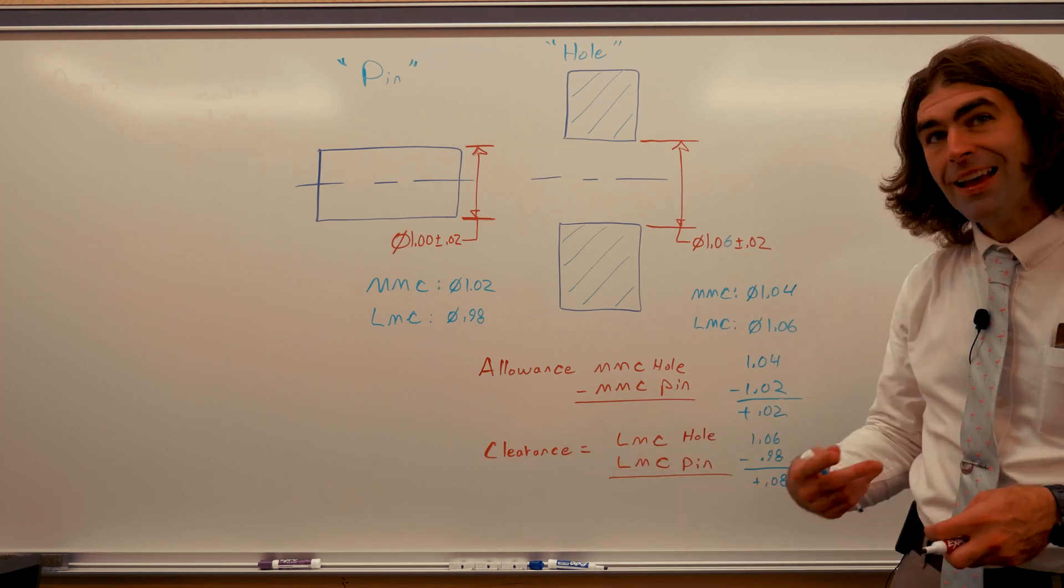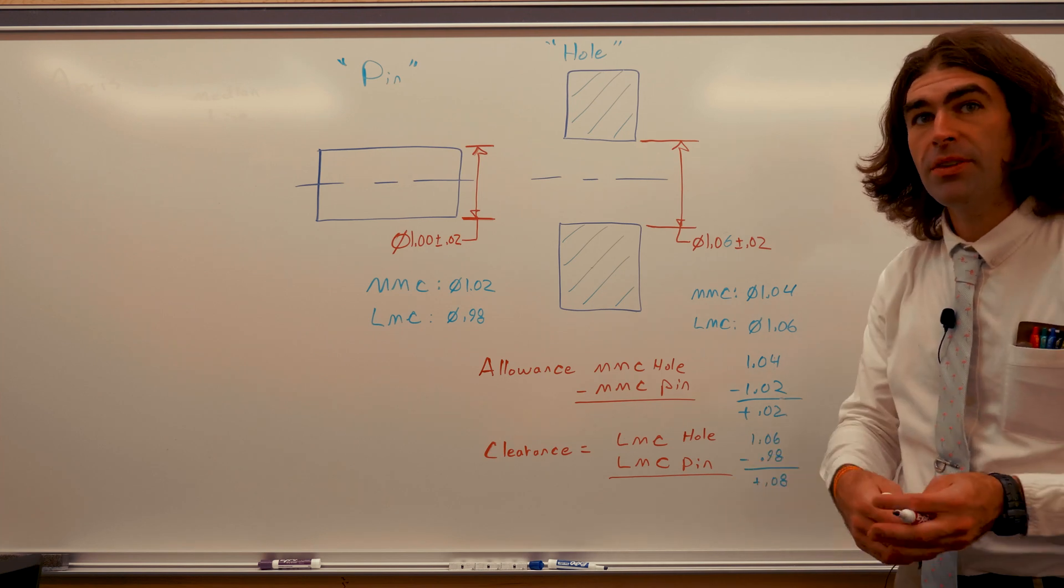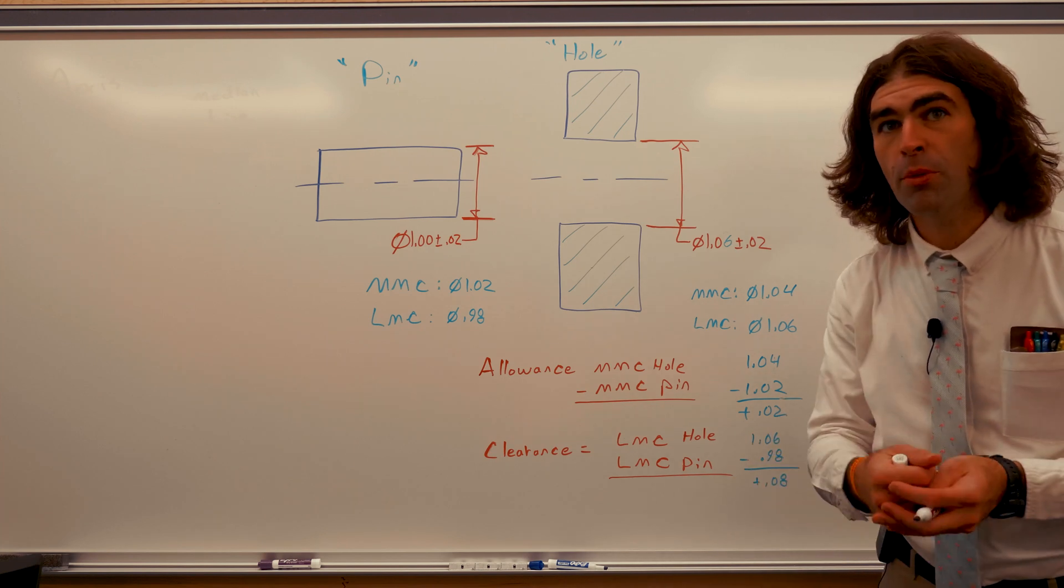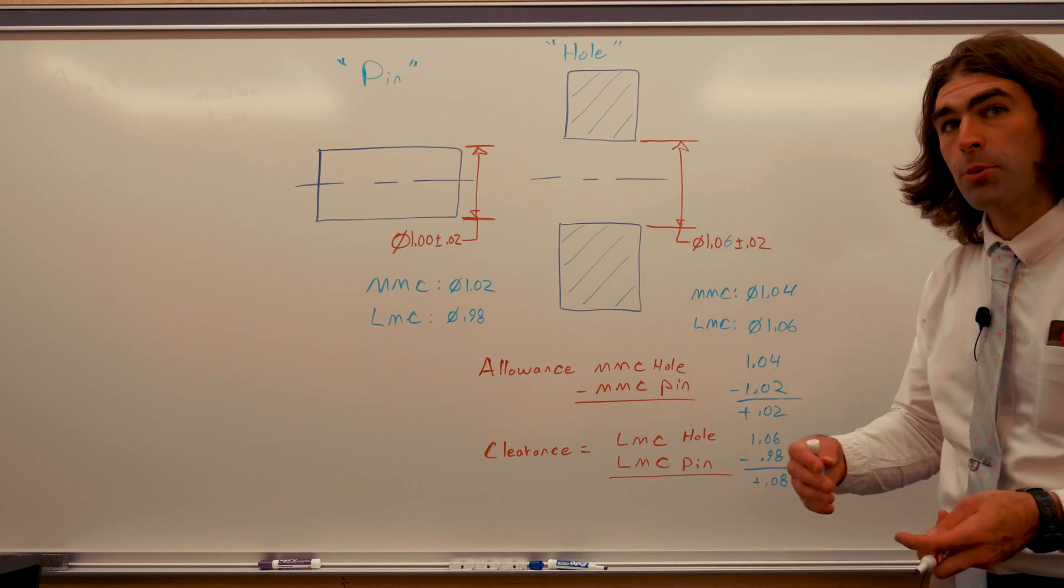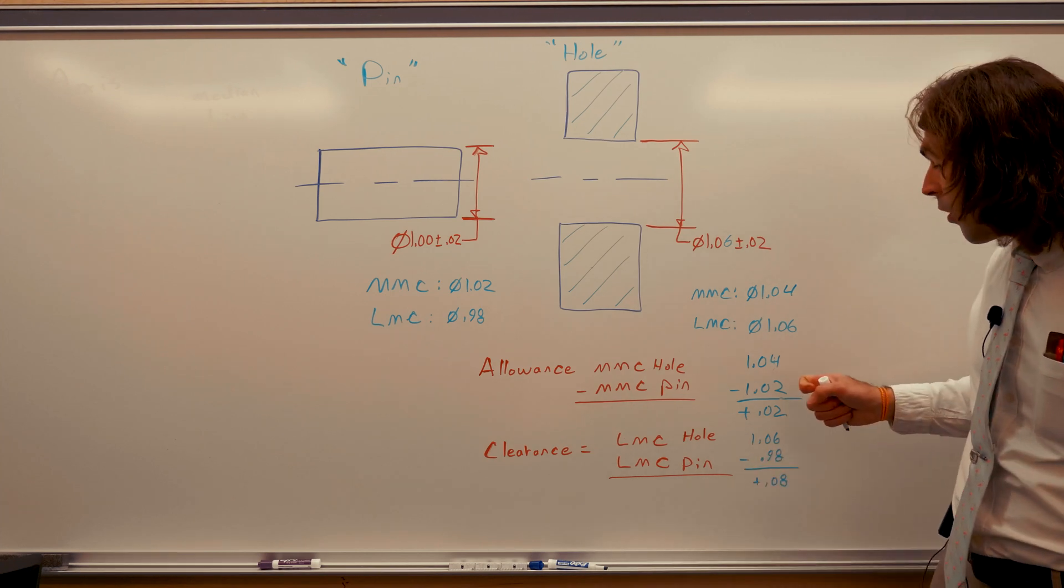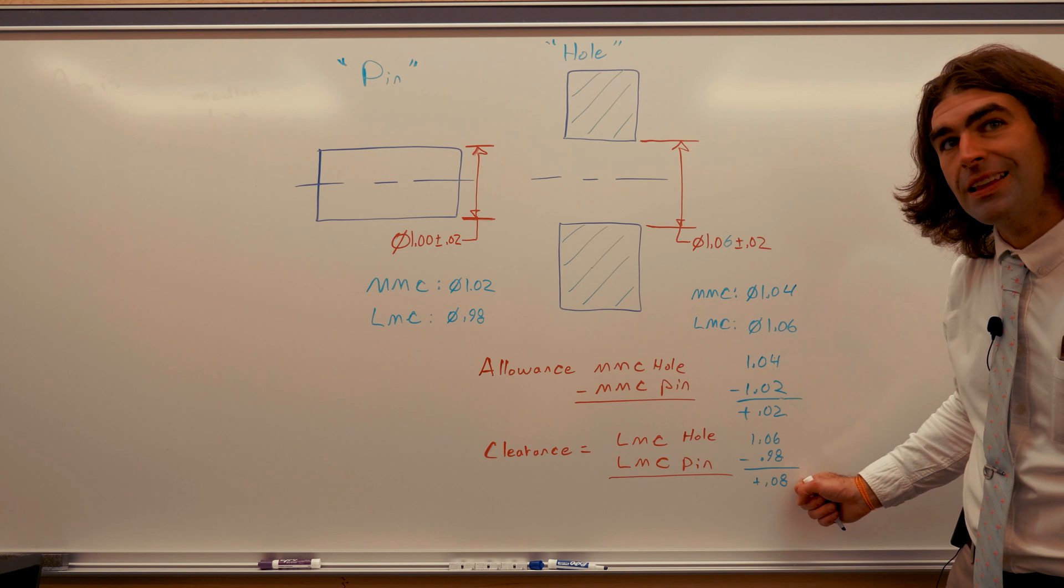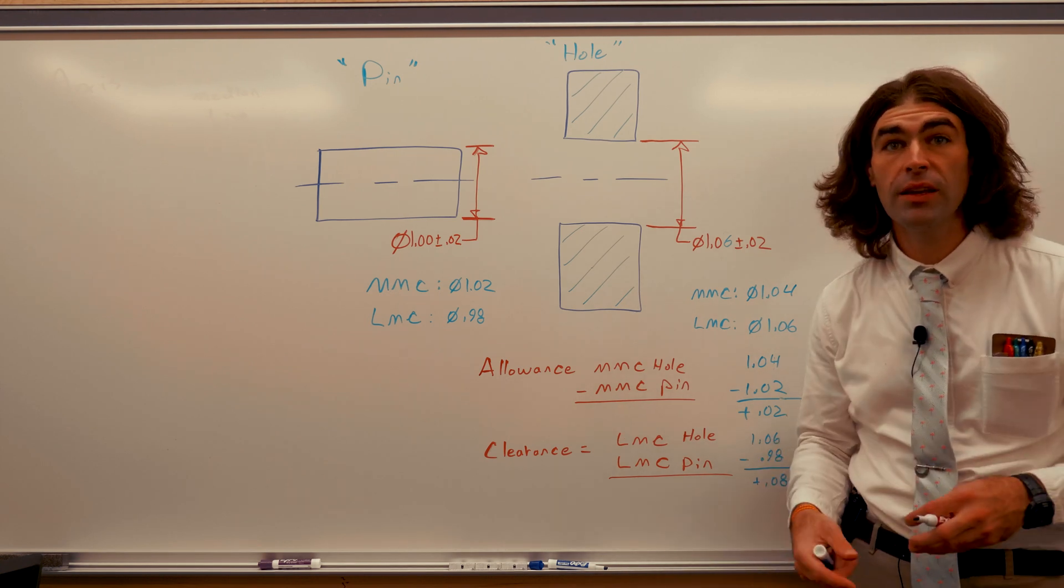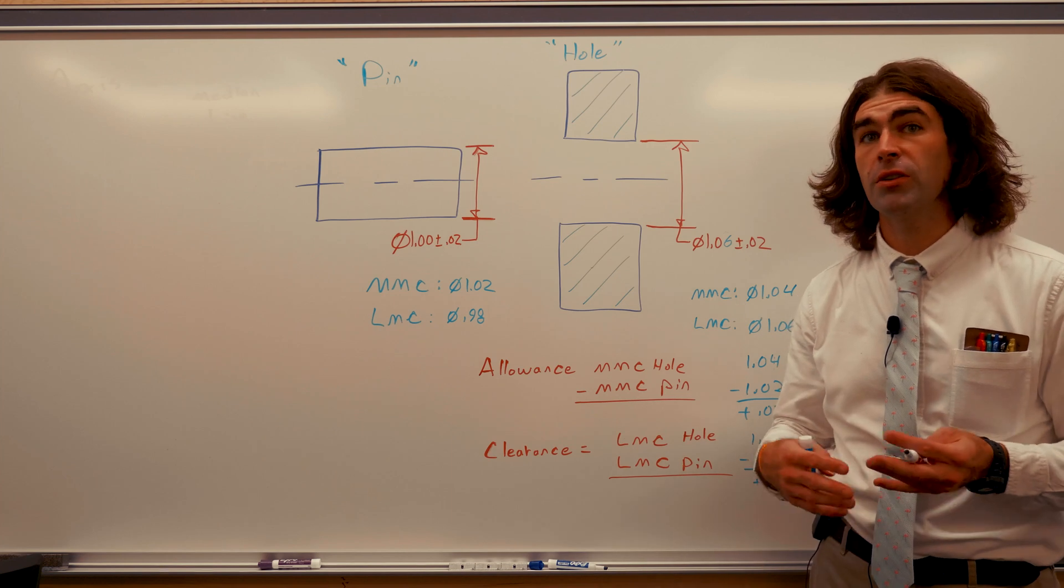The clearance is the LMC of the hole, so the biggest the hole can be, and the LMC of the pin, the smallest the pin can be. This is going to result in the maximum play there can be. So we could say in this assembly, there's always going to be 20 thousandths and there can be up to 80 thousandths.